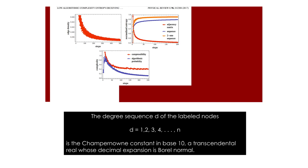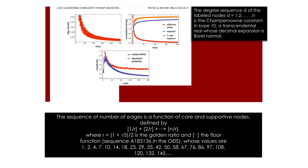Interestingly, the sequence of number of edges is a recurrence relation built upon previous iteration values between core and supportive nodes, defined by a beautiful sequence involving the golden ratio. The brackets represent the floor function.